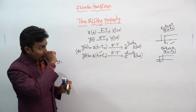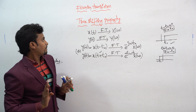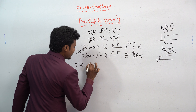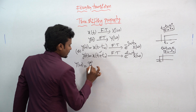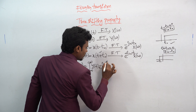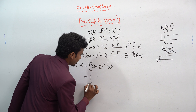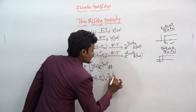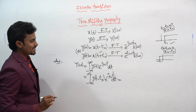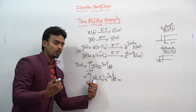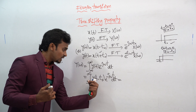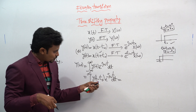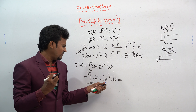Now let's solve this property. Applying the Fourier transform: Y(ω) = integral from -∞ to +∞ of y(t)·e^(-jωt) dt. Substituting y(t) = x(t - t₀), this becomes the integral from -∞ to +∞ of x(t - t₀)·e^(-jωt) dt.